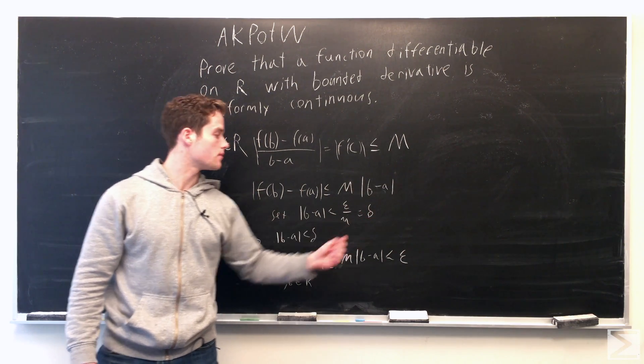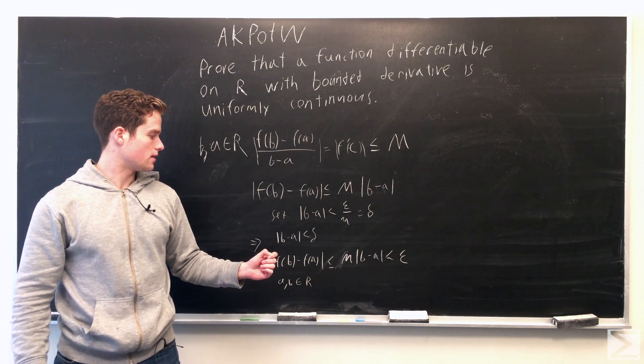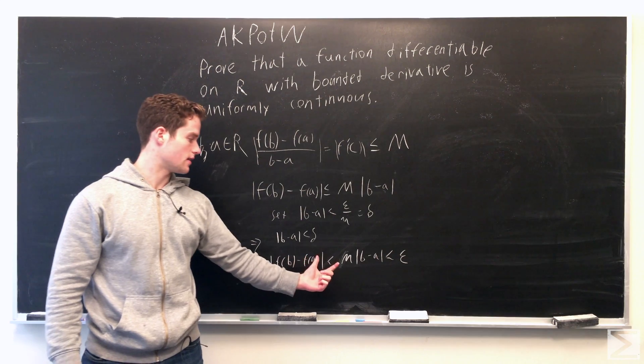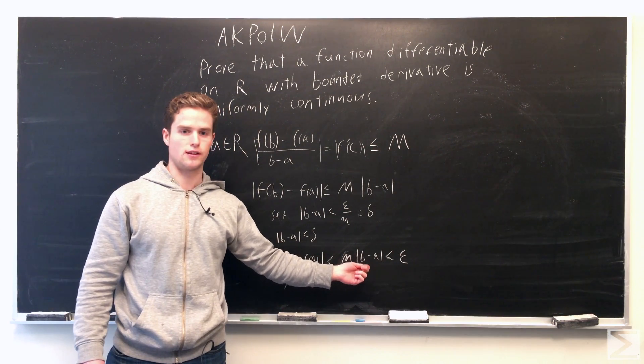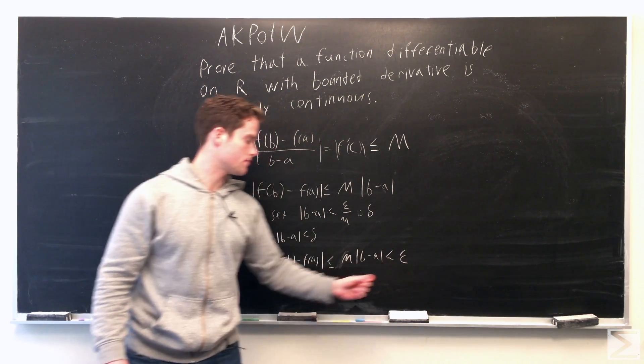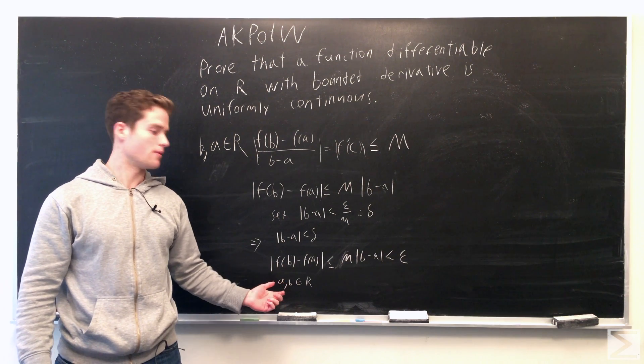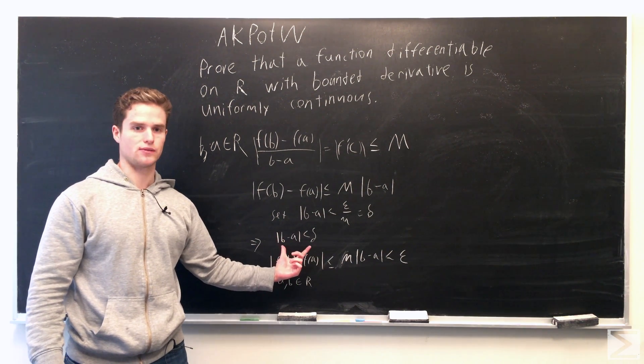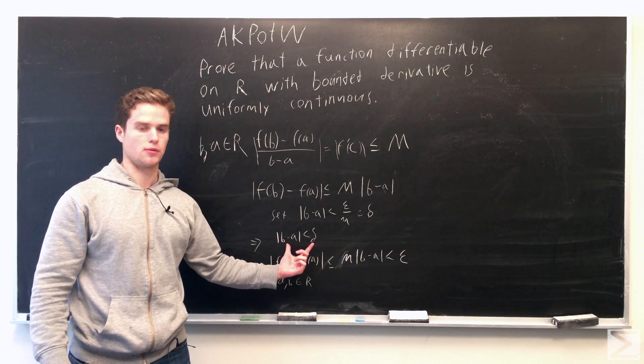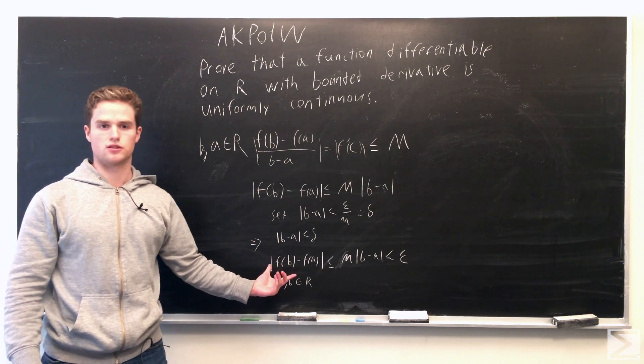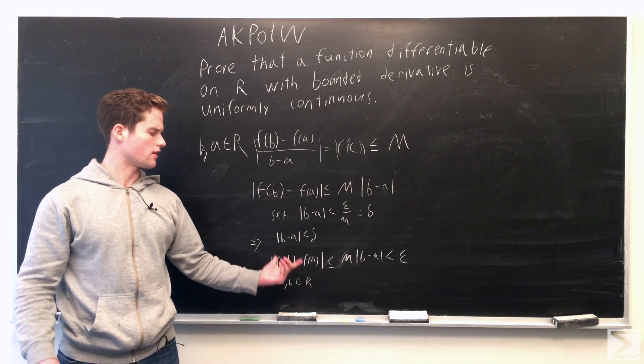And we get f of b minus f of a less than or equal to m times the absolute value of b minus a, which is less than epsilon for any a, b member of R such that they satisfy this delta requirement. And this is just uniform continuity.